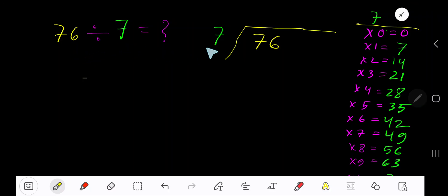76 divided by 7. Here 7 is a divisor, so we need the multiplication table of 7. 7 times 0 is 0, 7 times 1 is 7, 7 times 2 is 14, 7 times 3 is 21, 7 times 4 is 28. To find out the multiplication table of 7, just add 7 with the previous step.